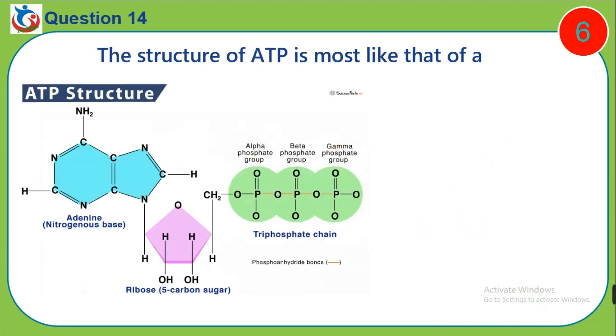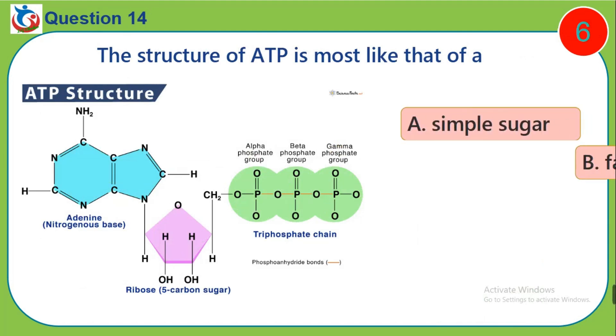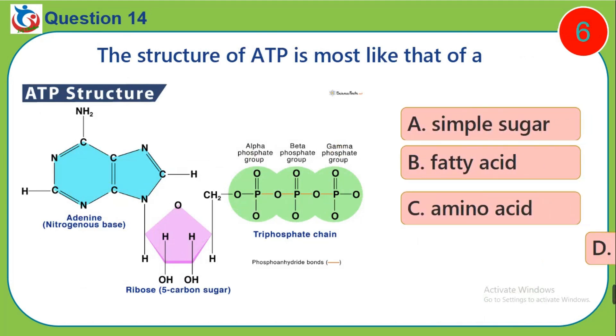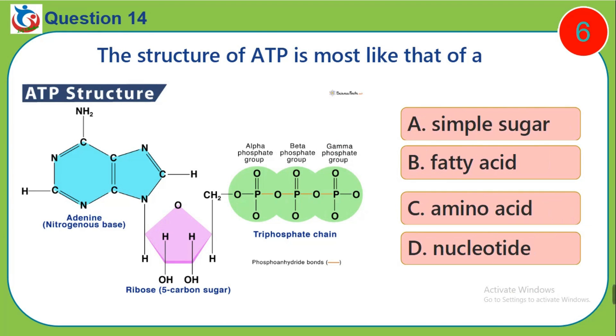Question 14. The structure of ATP is most like that of a: A. Simple sugar. B. Fatty acid. C. Amino acid. D. Nucleotide.